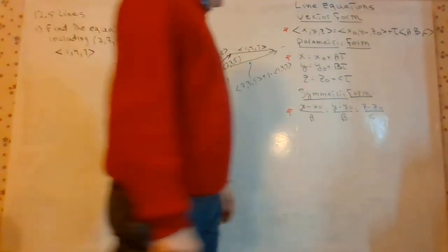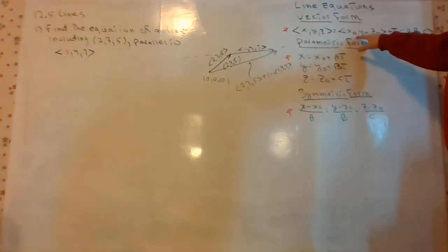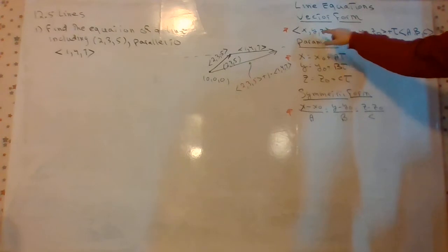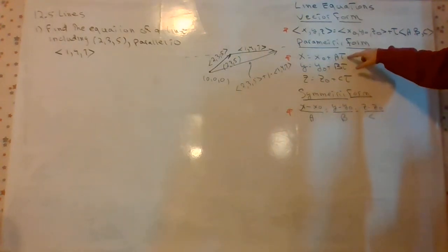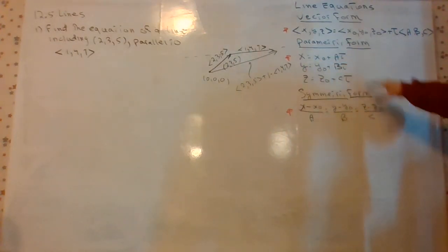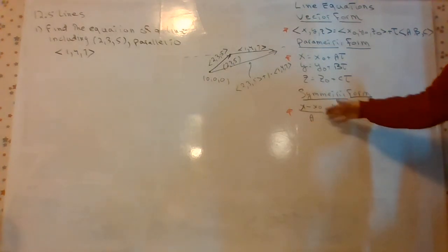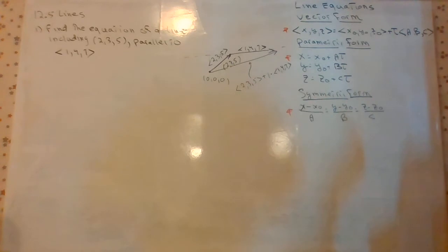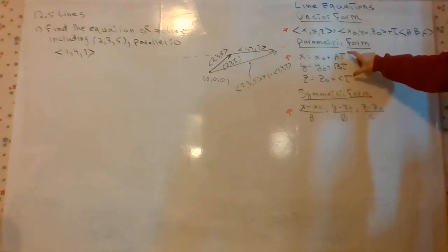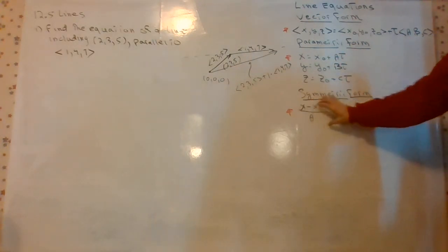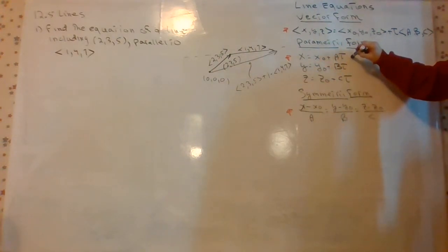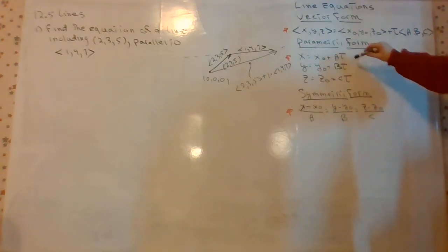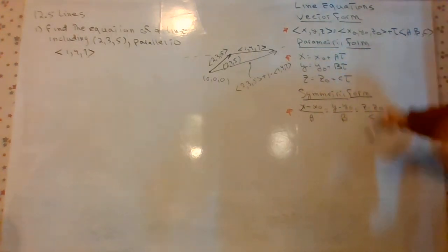The parametric form comes from unpacking the vector: x equals x0 plus at, y equals y0 plus bt, and similarly for z. If you solve each equation for t and set all three equal, you end up with the symmetric form, which has no variable t. Sometimes t can be important — if t represents time, this tells you not just the trace of the line, but where you'll be at a specific location. Very important in physics — quite often we want to know not just where the bomb's going to hit, but when.